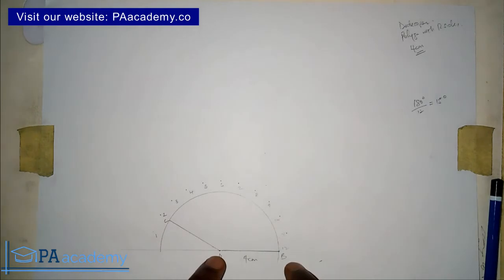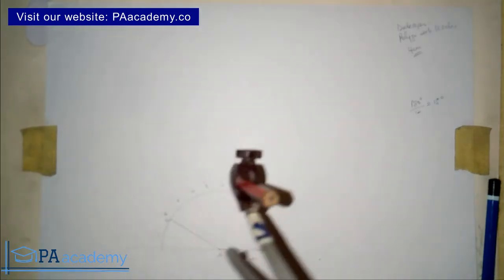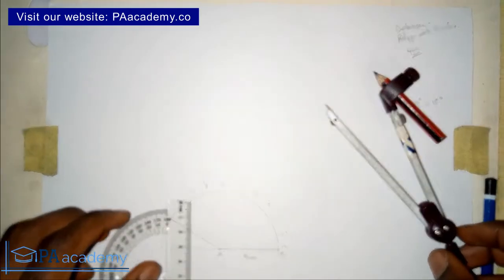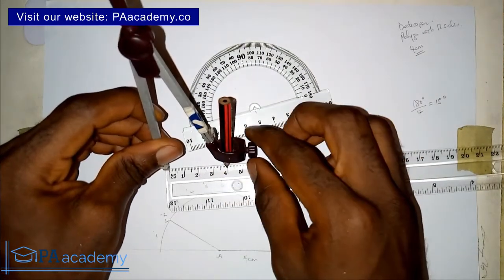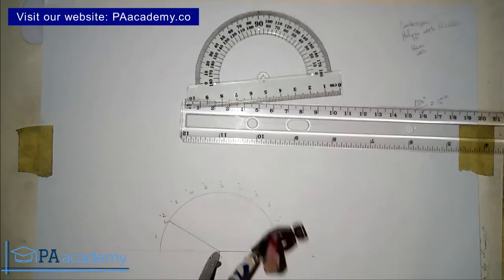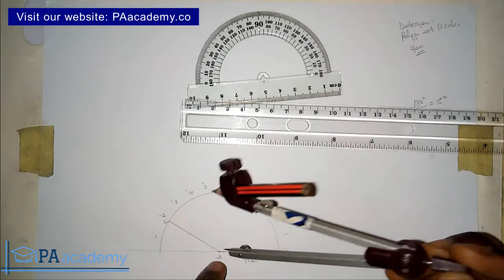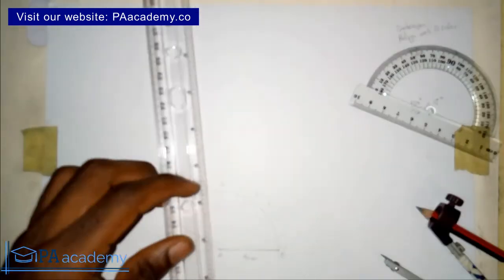Now we are going to bisect line AB and line AC. Bring your compass back with the same 4 centimeters. Place it on point B, draw an arc at the top and below. Then place it on point A with the same length and draw arcs at the top and below. Make sure you don't let the compass shift — confirm it is still measuring 4 centimeters — as even a small shift will give you the wrong results.